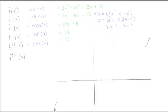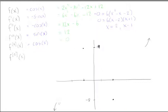Plugging x = -1 into the original function gives y = 19, which is a local maximum. Plugging x = 2 gives y = -8, which is a local minimum. Since the function goes up then down then back up, the maximum is at (-1, 19) and the minimum is at (2, -8).